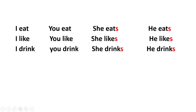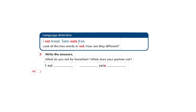And if we have Sarah, Ali, any name, we add also S. Now open your book, page 40. You'll find here: I eat, no S. I eat bread. But here, Sammy — because he's a boy, it's a name — we say Sammy eats fruit. We add S.